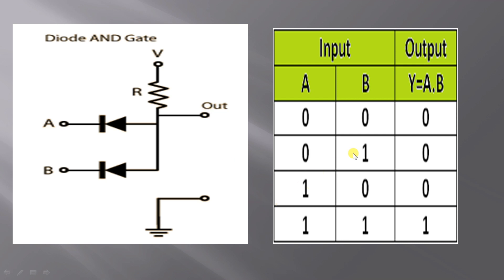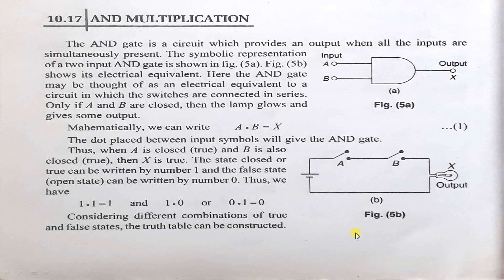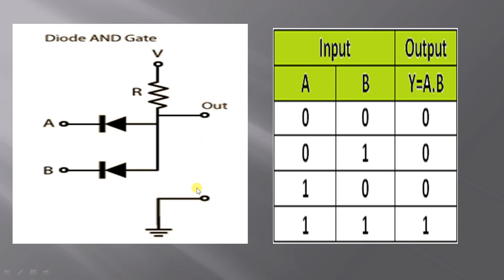Output voltage is high only when all the inputs are high, and output voltage is low when any of the inputs is low. This is all about AND gate. It is the symbolic representation of AND gate, the implementation through switches, the implementation through diodes, and the truth table. The output is represented by Y is equal to A dot B.